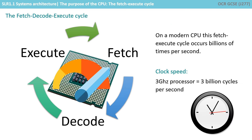On a modern CPU, this fetch-execute cycle occurs billions of times per second and is called the processor's clock speed. Clock speed is measured in hertz, with one hertz meaning one cycle per second. We'll be taking a deeper look at how this all actually works and what goes on behind the scenes in the next two videos.